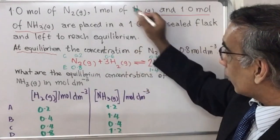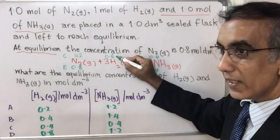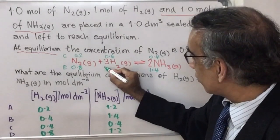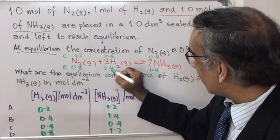For hydrogen, beginning with 1, and then 0.6 being the amount that reacted, the change, it means you'll be left with 0.4.